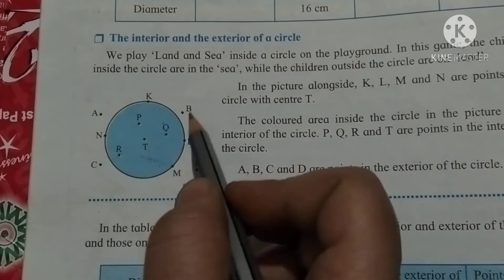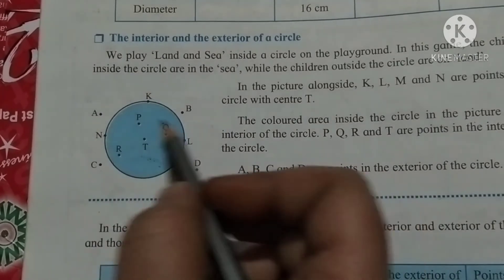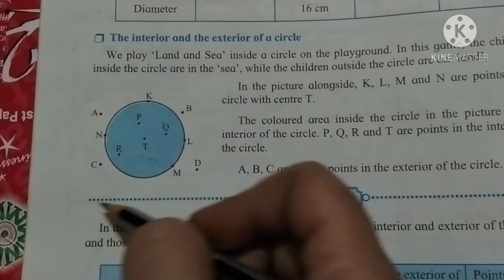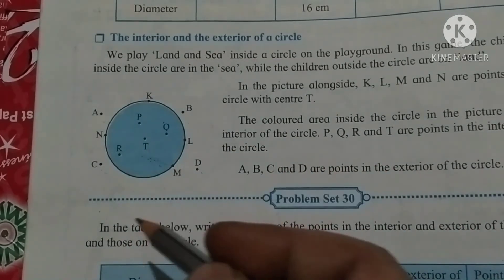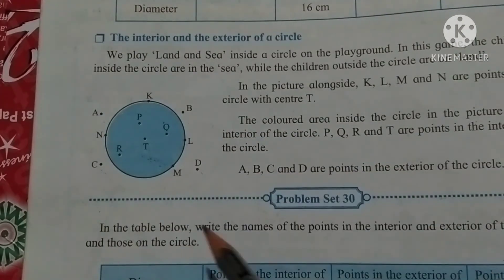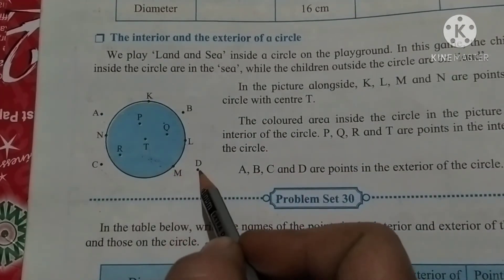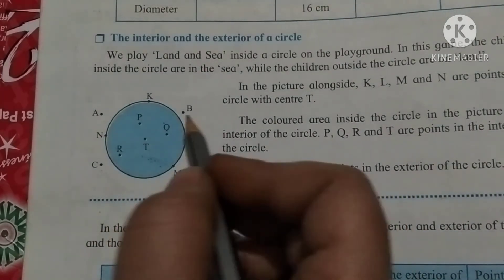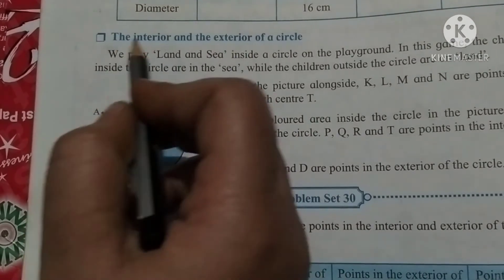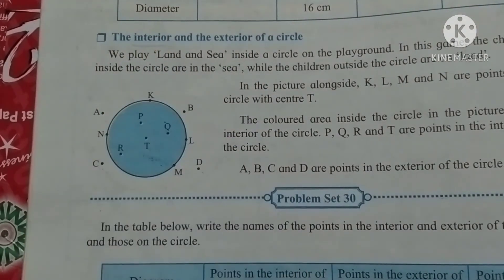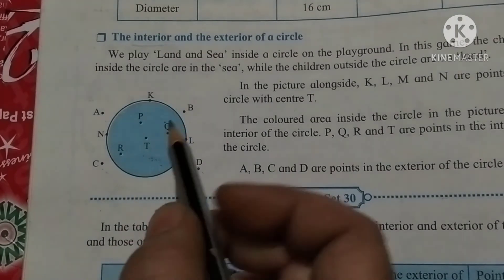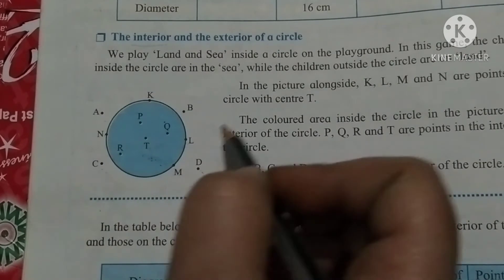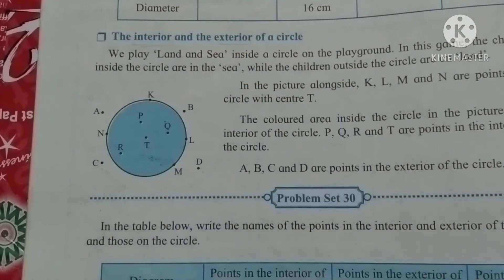And the points A, B, D, C are to the outside of the circle. So these points are called the exterior of the circle. The points which are inside the circle are called interior of the circle, while the points which are outside the circle are called exterior of the circle.